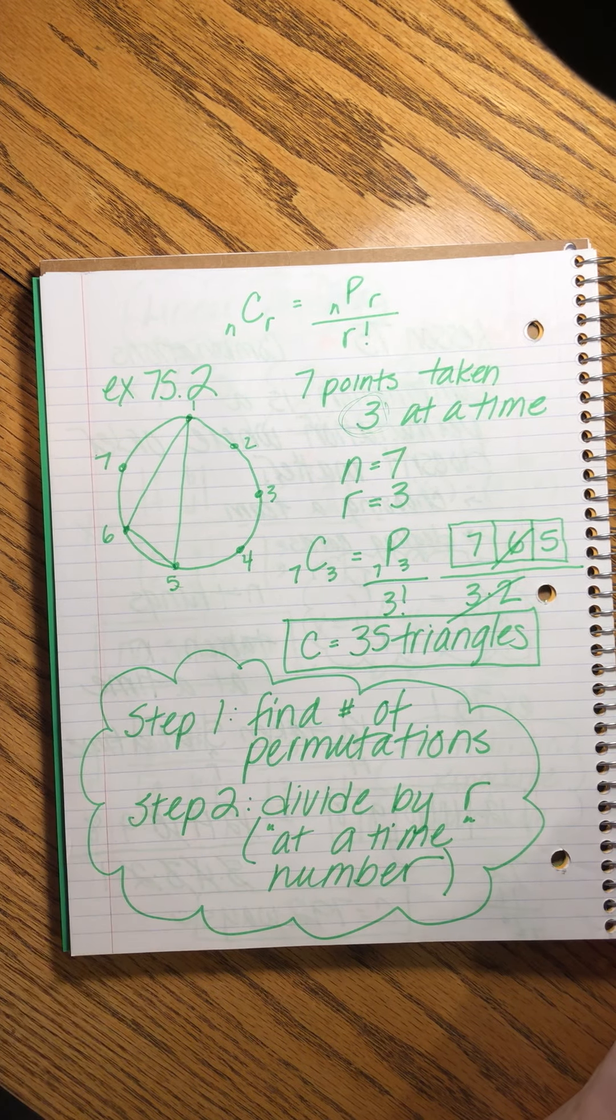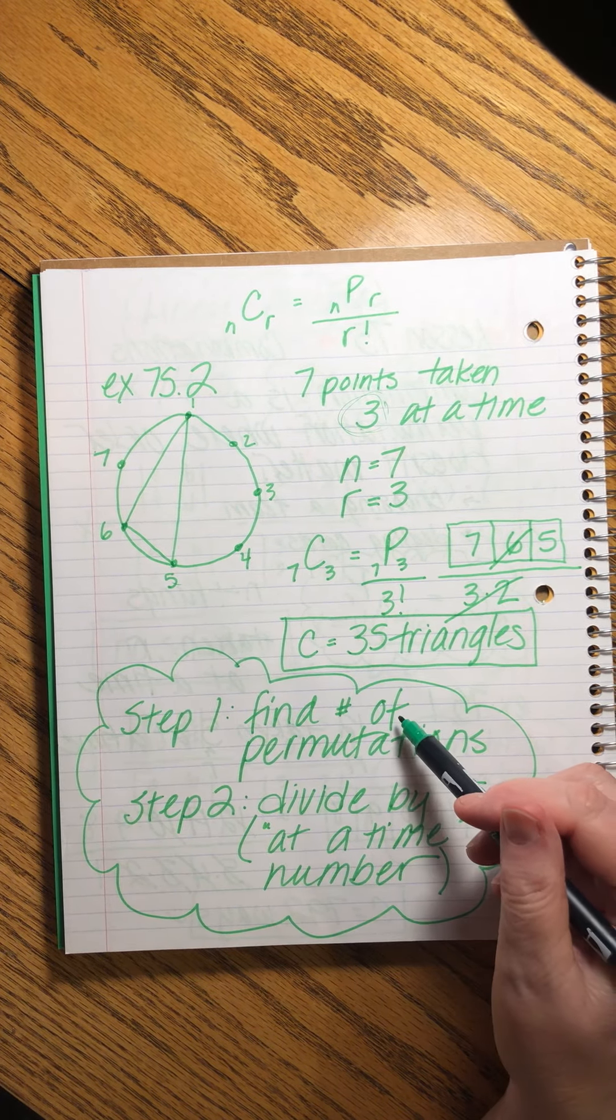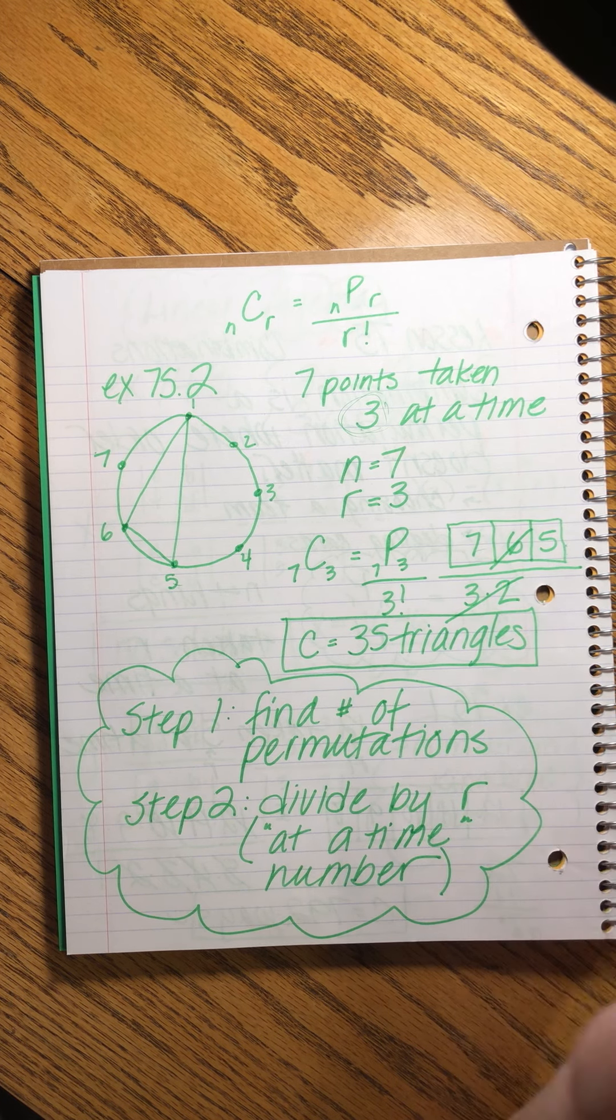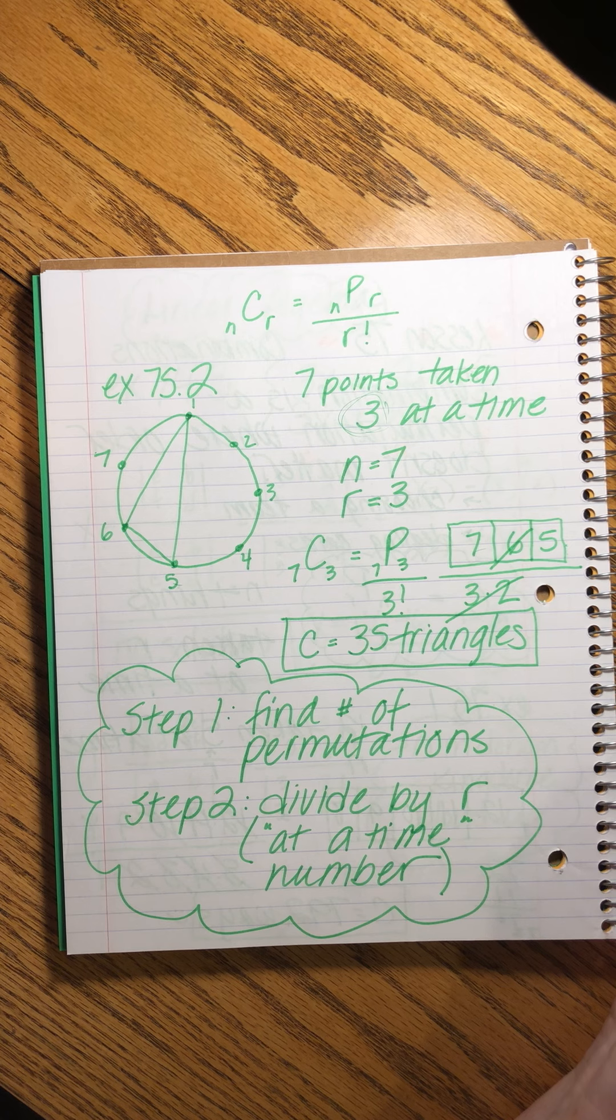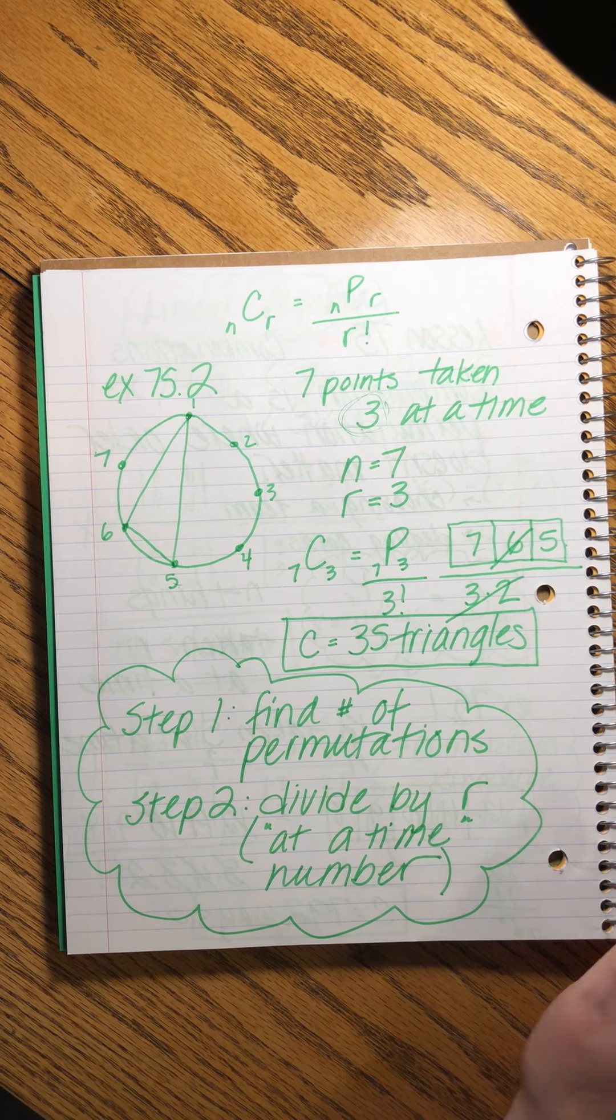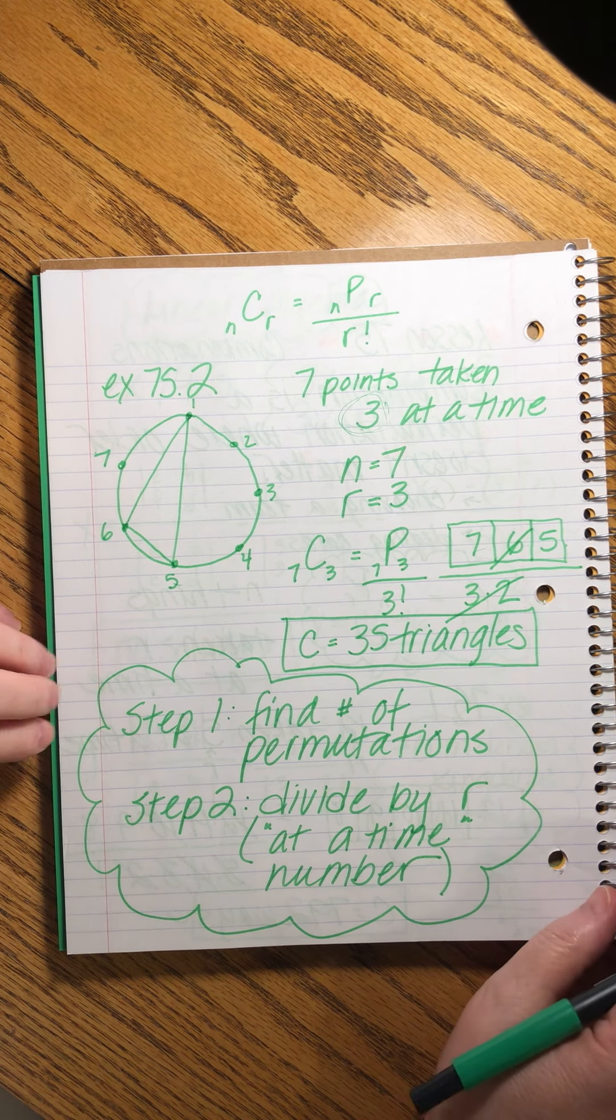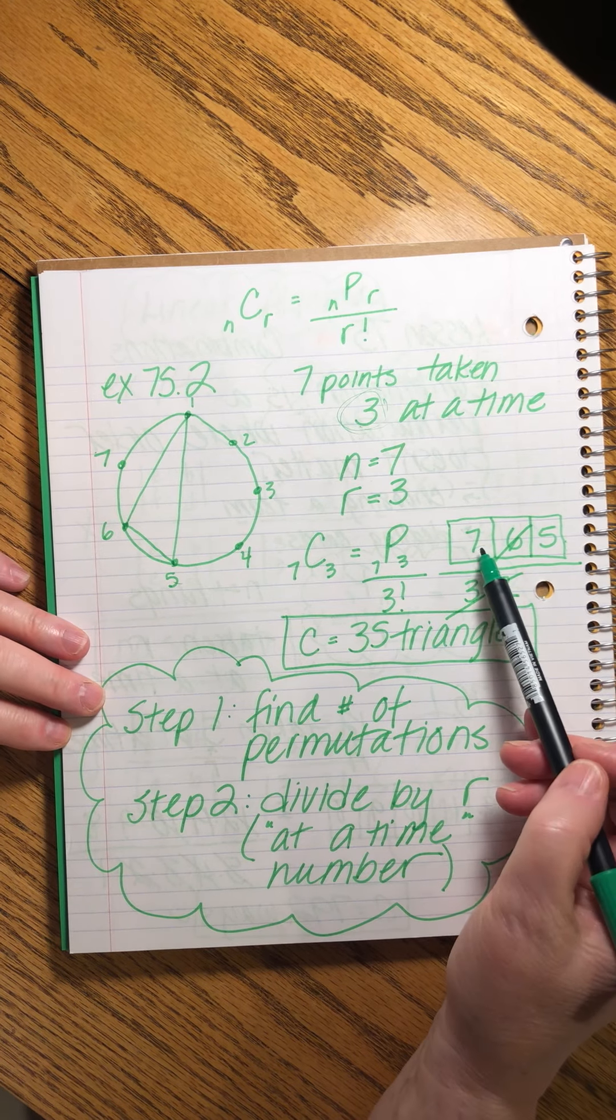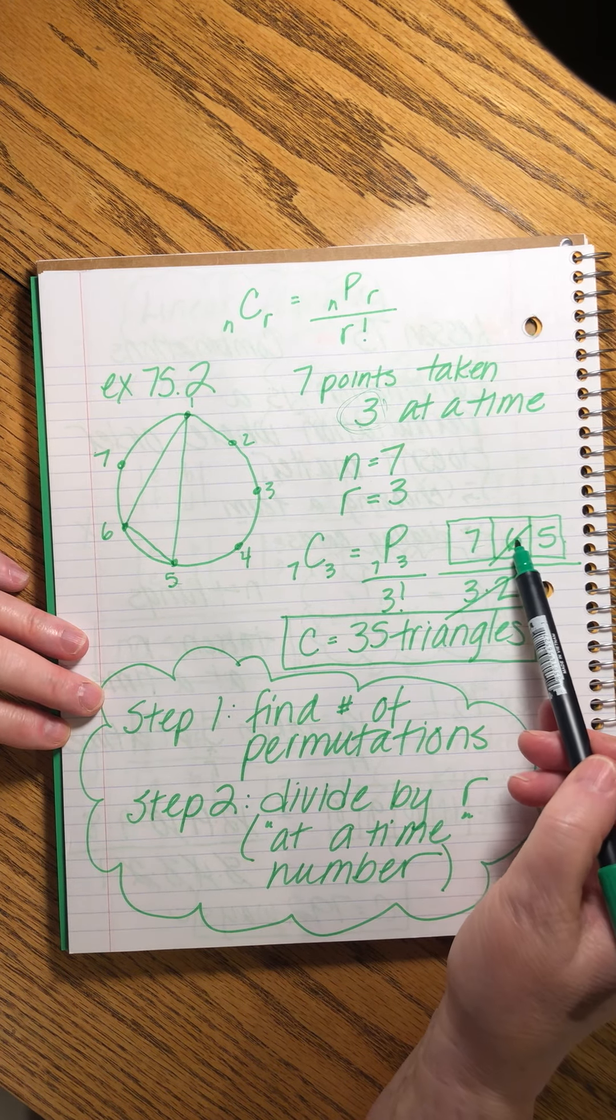Again, we have a formula that we can use to do this, but I really much prefer, I always like to draw the picture of the things if it's at all possible. It just makes me feel more confident. It makes me feel like I understand what's going on a lot better. It's not just numbers flying around. It's me saying, okay, we have seven points to choose from, then we have six, then we have five. I just like the way that feels in my brain.